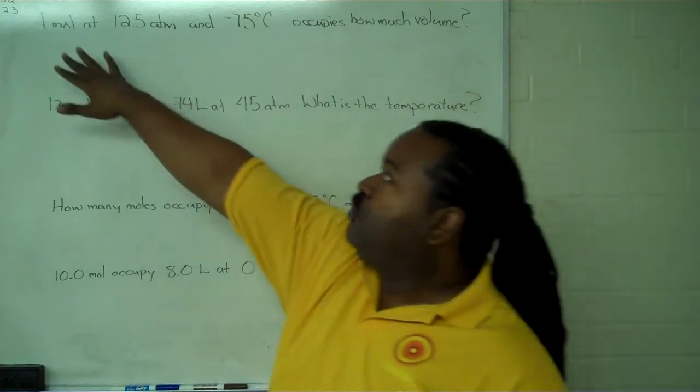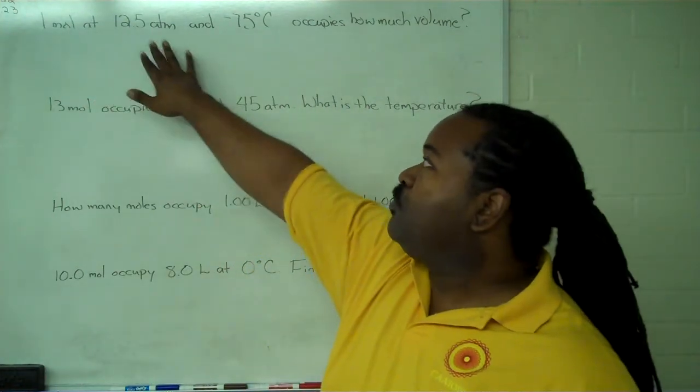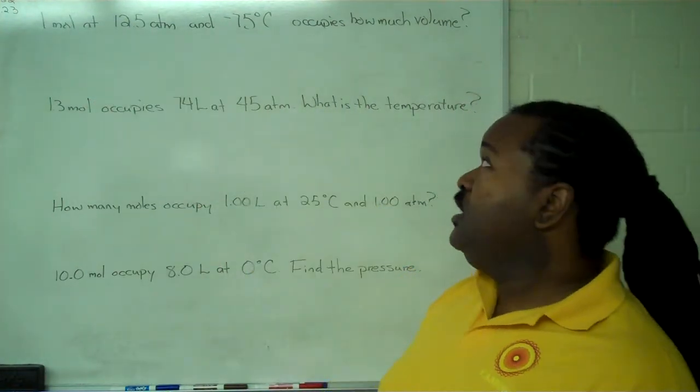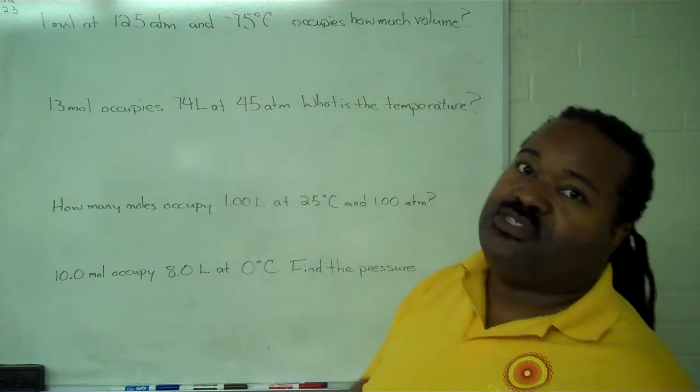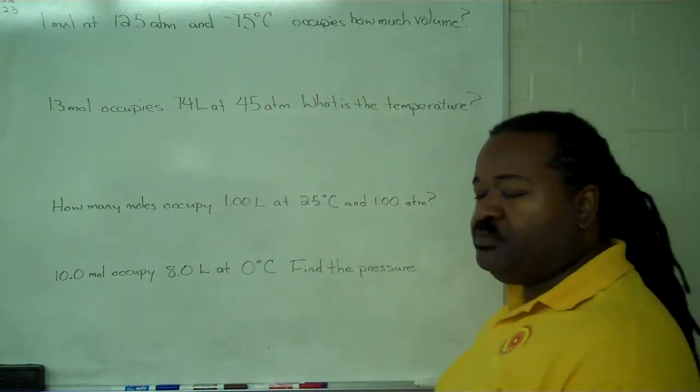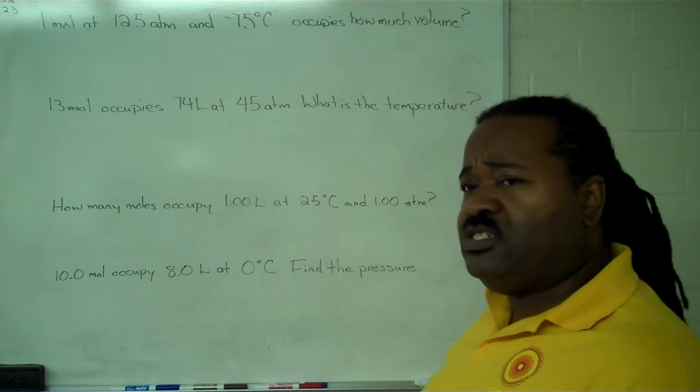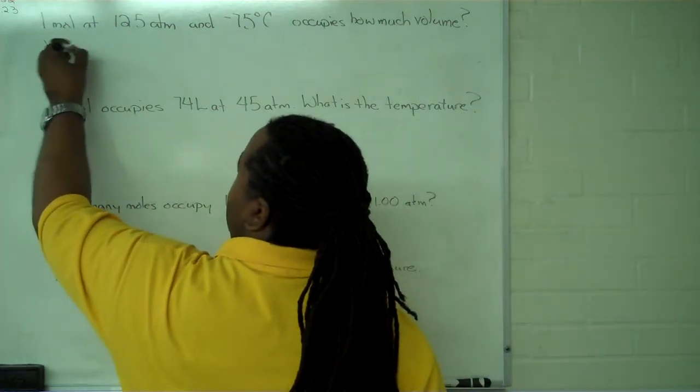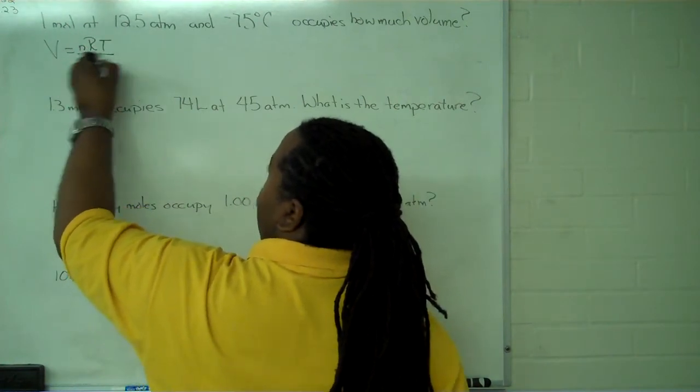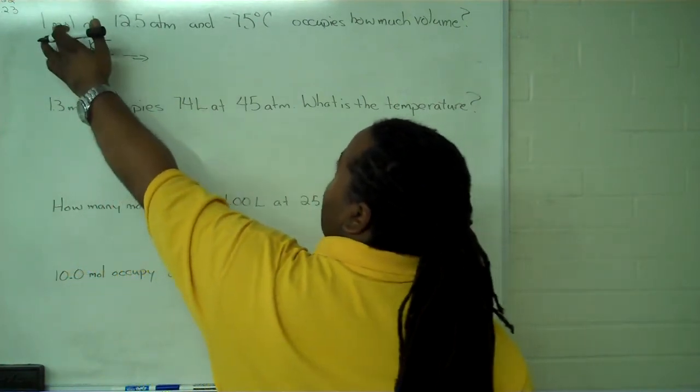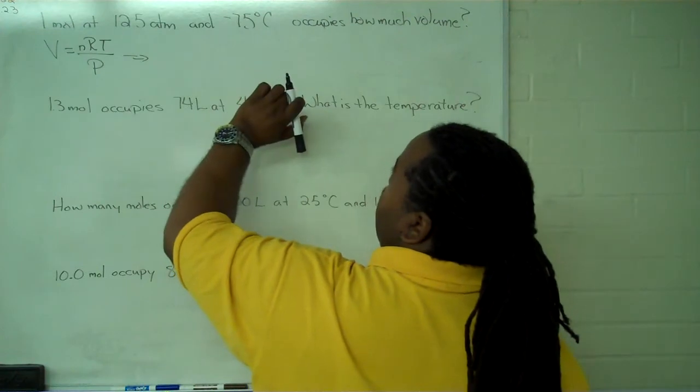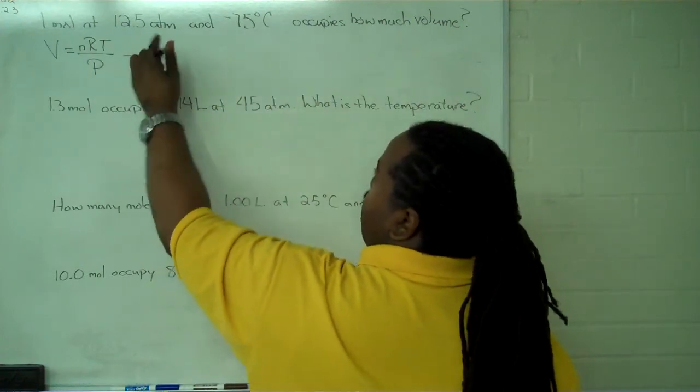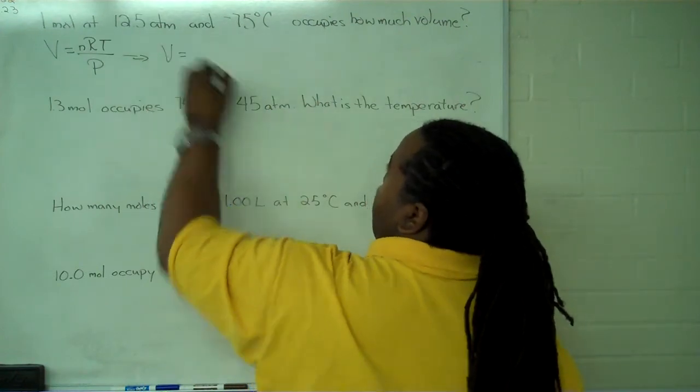In our first example here, we have one mole of an ideal gas at 12.5 atmospheres and negative 75 degrees Celsius, and we're looking to find the volume. Since the ideal gas law is PV equals NRT, we need to use V equals NRT over P. We have the moles, we have the pressure, and we have the temperature, and so we can substitute in everything.